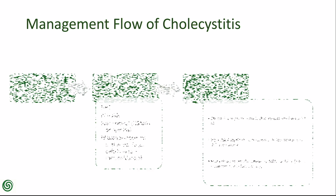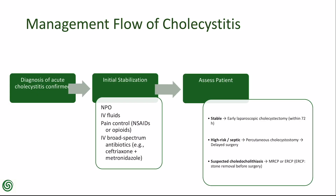Initial stabilization includes NPO status, IV fluids, pain control, and IV broad-spectrum antibiotics. Definitive treatment is early cholecystectomy, preferred within 72 hours if the patient is stable. If the patient is high-risk or septic, percutaneous cholecystostomy is considered, followed by delayed surgery. If choledocholithiasis is suspected, MRCP or ERCP should be performed — ERCP allows for stone removal prior to surgery.